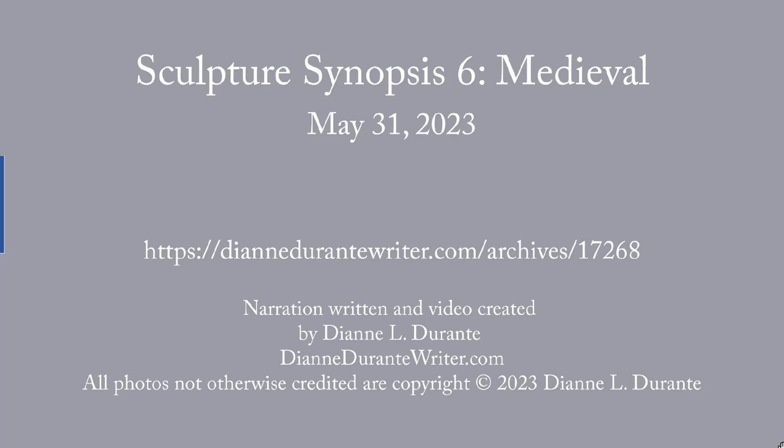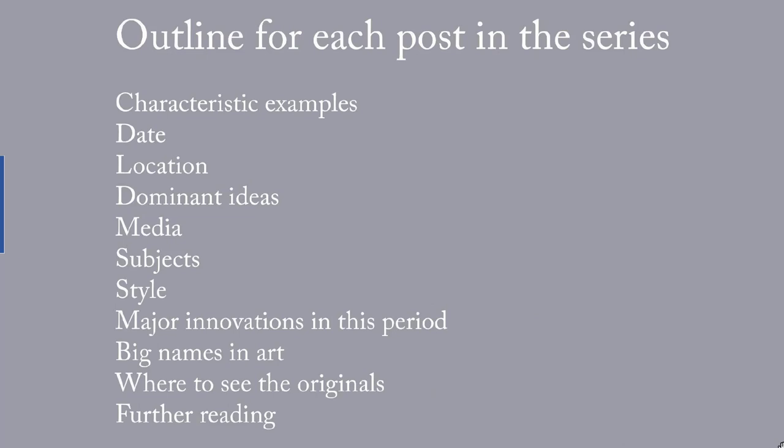This is the sixth part of my Sculpture Synopsis series, and it's on medieval art. As with the other posts in the series, we will cover characteristic examples, the date, the location, dominant ideas, media, subject, style, major innovations in this period, big names in art, where to see the originals, and then some further reading.